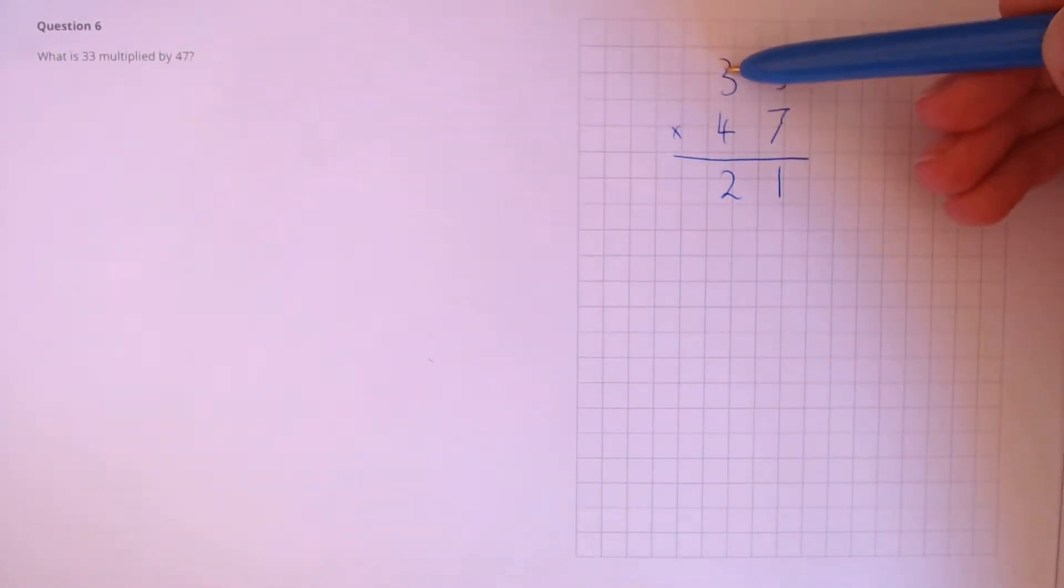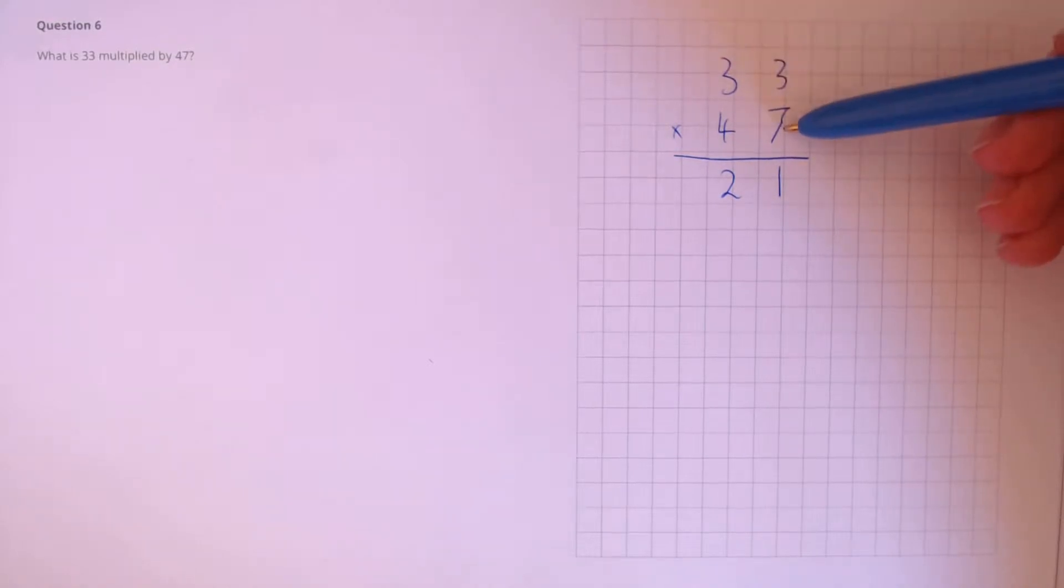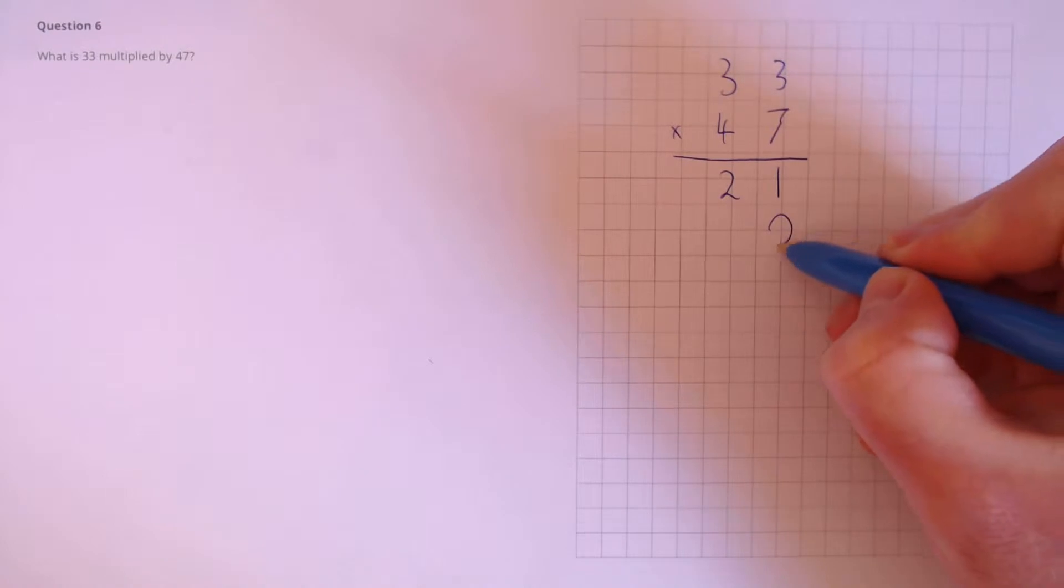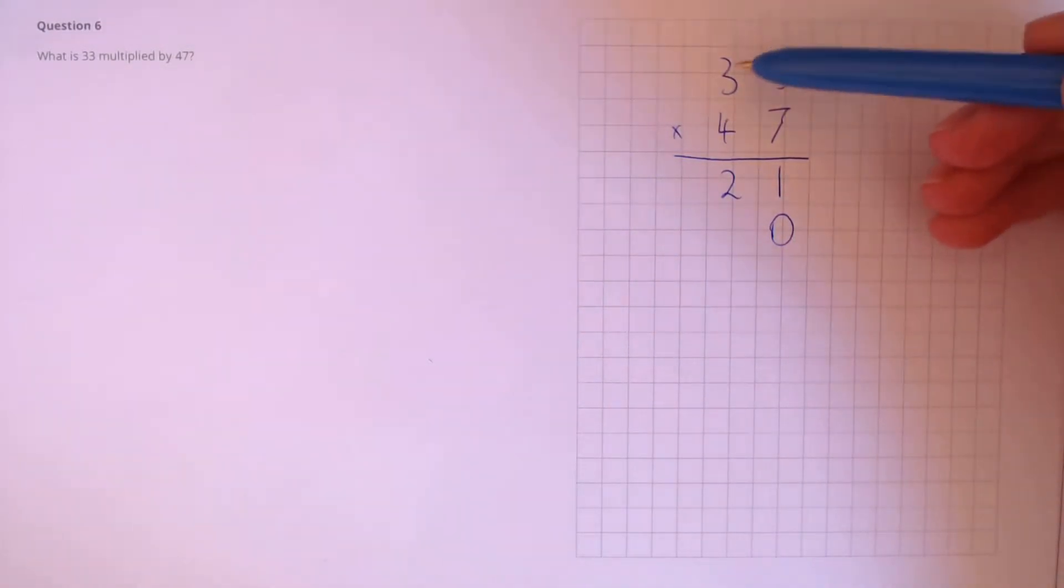Next, let's multiply this tens column by the units column here. Because we're multiplying a tens column by a units column, we need to stick in a zero first to notify this is a 10.